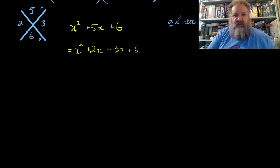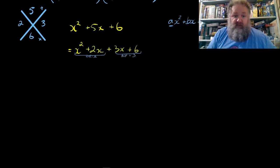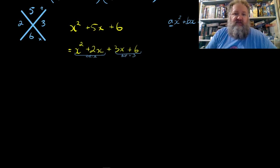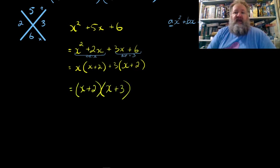Now we factor by grouping. We group the first two terms and the last two terms. The highest common factor of the first group is x, and for the second group it's 3. We pull those outside new brackets, divide through, and we end up with a common factor we can pull out front.